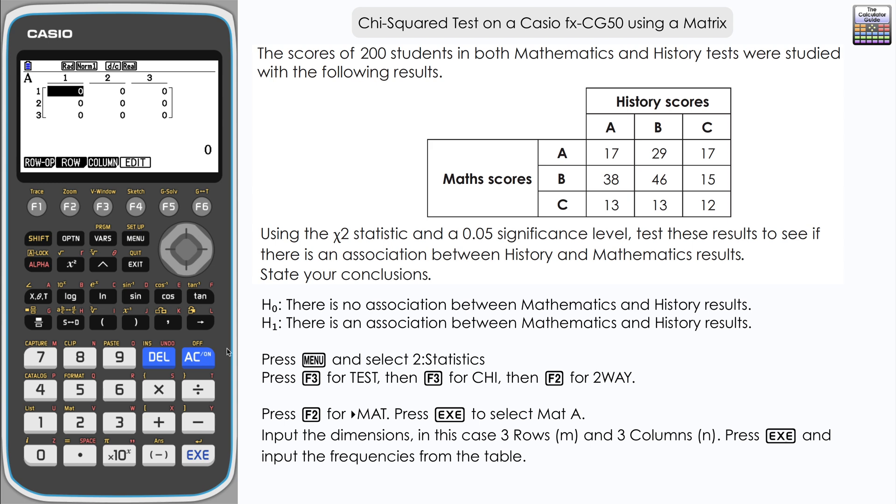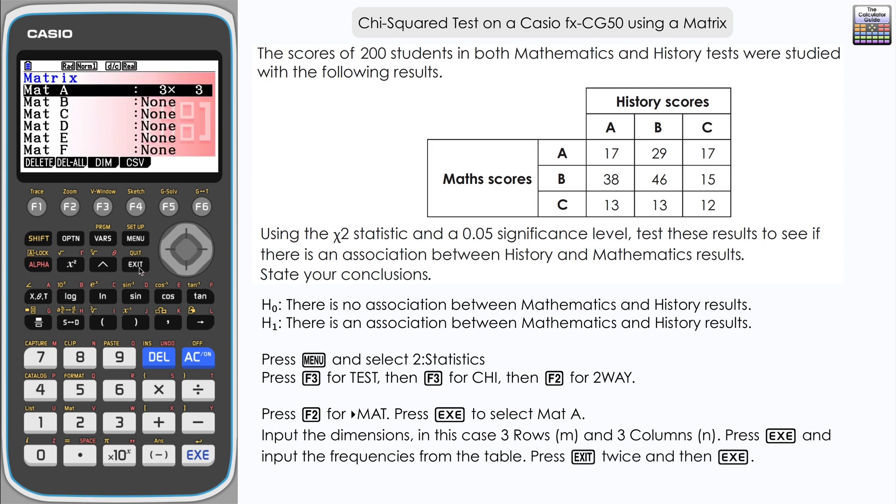Just input the maths and history grades, carefully entering the information from the table. I've sped this up slightly for timing, but you take your time to make sure you input those correctly. Once you've got all the information in, press exit and you can see our three by three matrix for matrix A. Press exit again to go back to the chi-squared test screen.